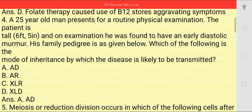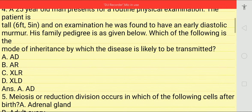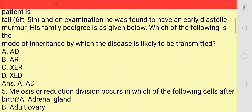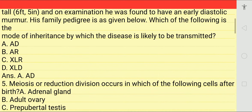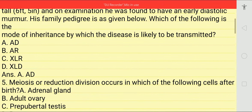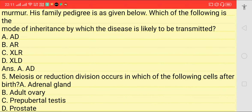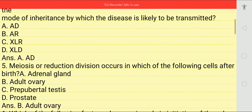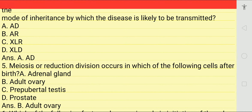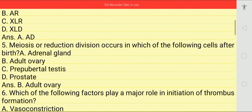Next question: a 25-year-old man presents for routine physical examination. On examination he was found to have an early diastolic murmur. His family pedigree is given below. Which of the following is the mode of inheritance? Options: AD, AR, XLR, XLD. Answer is AD — autosomal dominant.